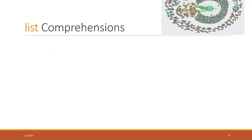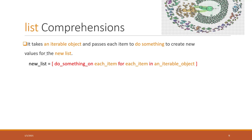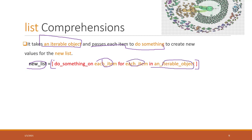Now let's introduce another very common Python concept called list comprehension. List comprehension takes an iterable object such as a string or list, and passes each item through an expression to create a new list. The syntax is: new_list = [do_something for item in iterable_object]. This may sound a little complicated, so let's look at an example.